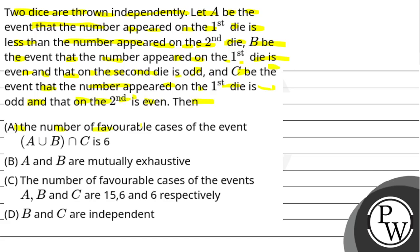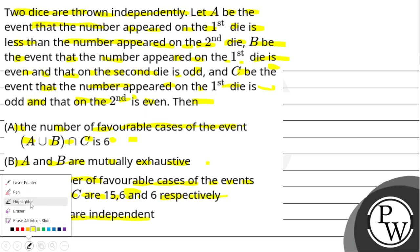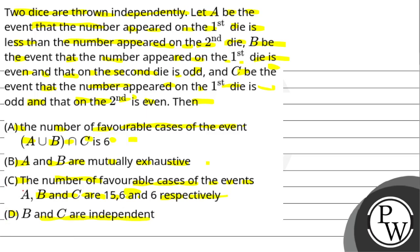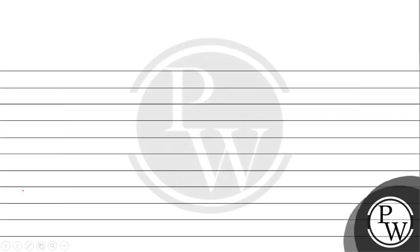Option A: the number of favorable cases of the event A∪(B∩C) is 6. Option A and B are mutually exhaustive. Option C: the number of favorable cases of events A, B, C are 15, 6, 6 respectively. Option D: B and C are independent events. This option is correct. This option is correct.